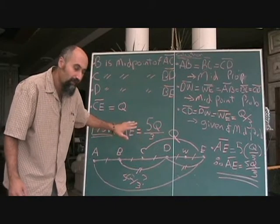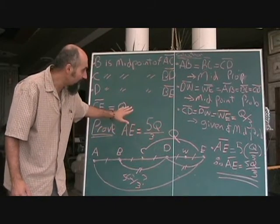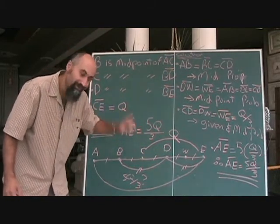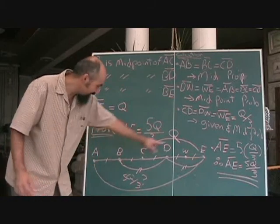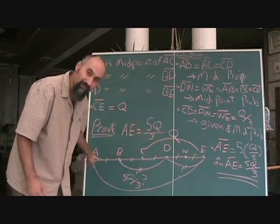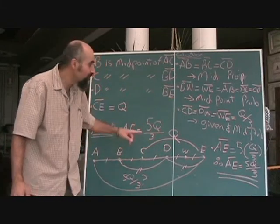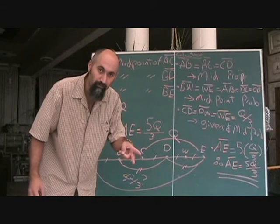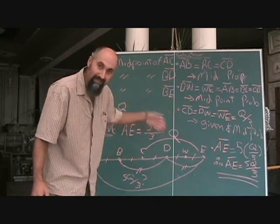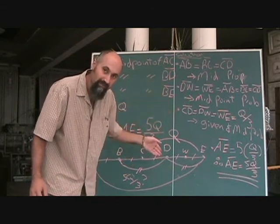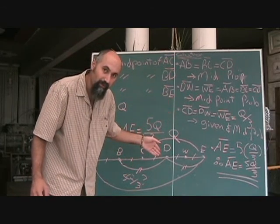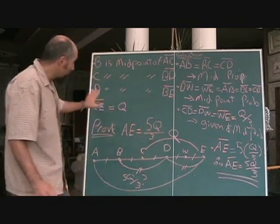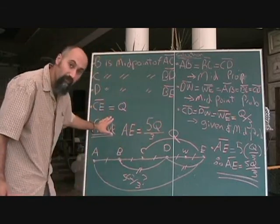This was actually a one-dimensional proof since everything was on a straight line. Next, we're going to go into a two-dimensional proof using the x-axis and y-axis — that's coordinate geometry. This problem had no coordinates involved.